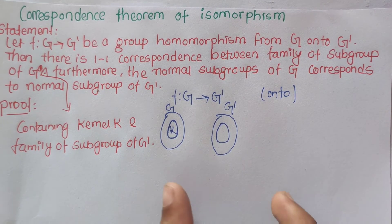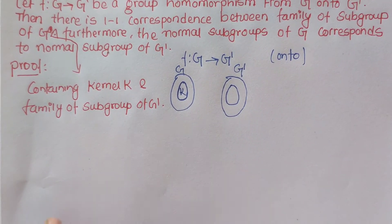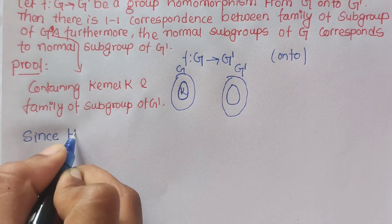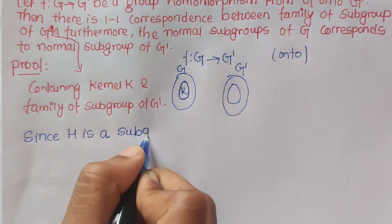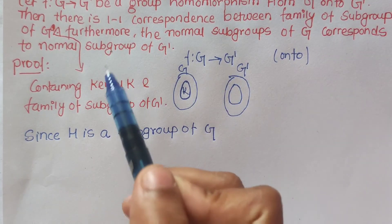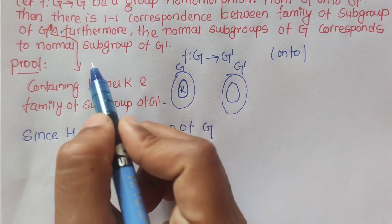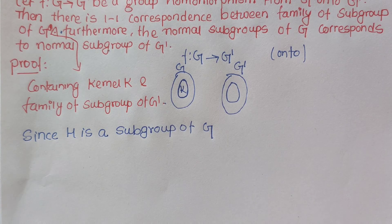We need to find the 1-to-1 correspondence between S (subgroups of G containing K) and S' (subgroups of G'). Furthermore, normal subgroups of G correspond to normal subgroups of G'. By a similar argument we can show that normal subgroups of G correspond to normal subgroups of G'.